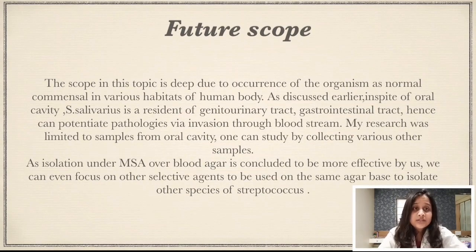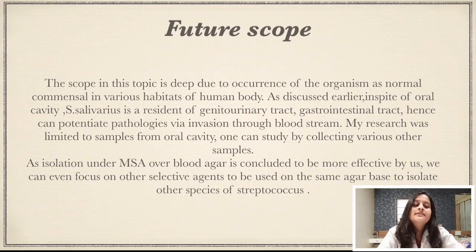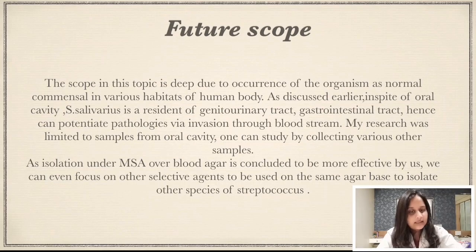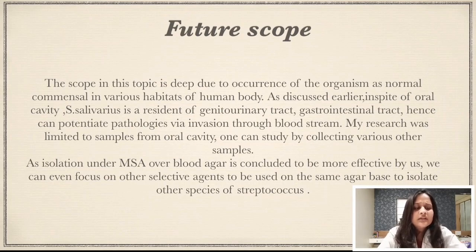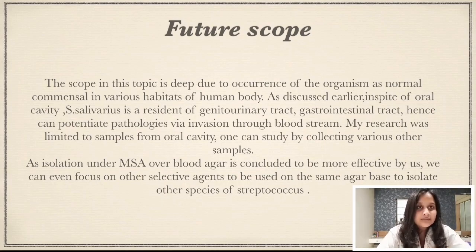S. salivarius is not just a normal commensal of the oral cavity but is also found in the GIT and genitourinary tract. One can go one step further and isolate samples from other sites and study them under the same media. Regarding the scope of the study, isolation under MSA over blood agar was concluded to be more effective. Further focus can be placed on other agents used for isolation of various streptococcal species that are more lethal, to obtain effective results. Thank you.